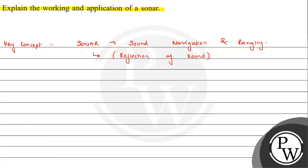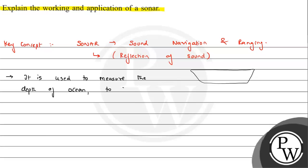Now let's understand its applications. SONAR is used to: measure the depth of the ocean; study underwater ship wreckage — ships that have sunk are studied using the phenomenon of SONAR; and to locate submarines — to know their speed and location, we use the principle and application of SONAR.